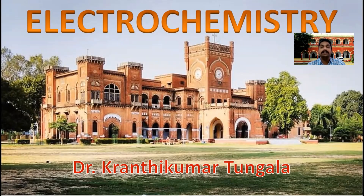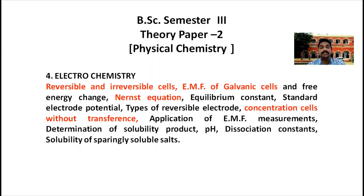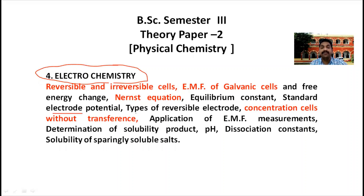Before we start, let me discuss about the syllabus for semester 3 and semester 5. In semester 3, physical chemistry is the second theory paper, and electrochemistry is in the fourth unit. In this fourth unit we will cover reversible and irreversible cells, EMF of galvanic cells and free energy change, Nernst equation, equilibrium constant, standard electrode potential, types of reversible electrodes, concentration cells without transference, application of EMF measurements, determination of solubility product, pH, dissociation constants, and solubility of sparingly soluble salts.